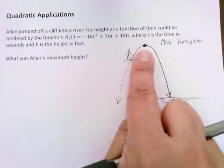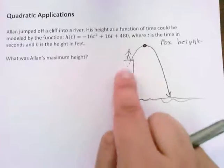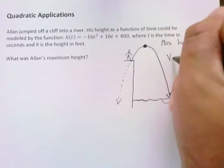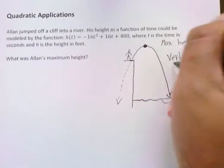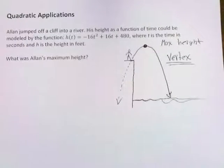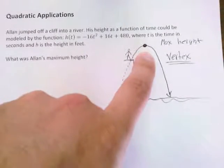So this is where the idea of Allan jumping into a river in mathematics, specifically quadratics, collides. So this point right here, the maximum height, if you look at it, is also known as the vertex. So really they're asking about what in the world is happening at the vertex. So let's try and figure out what this vertex is.